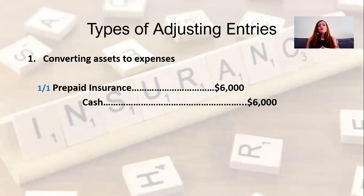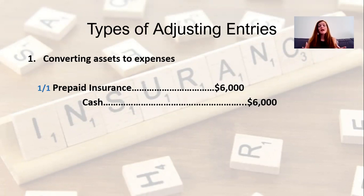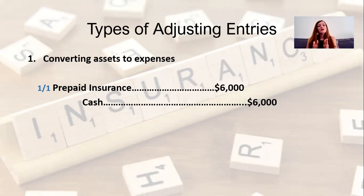My favorite example — and probably the main one you'd see in real life — is prepaid insurance. When you pay for insurance on a six-month period, you're going to pay upfront six months' worth of insurance. You haven't actually incurred that expense for all six months; you're paying it ahead of time. So that's actually an asset to you. Each month, as that insurance expires a little bit more, you're going to recognize a little bit of that asset as expense.